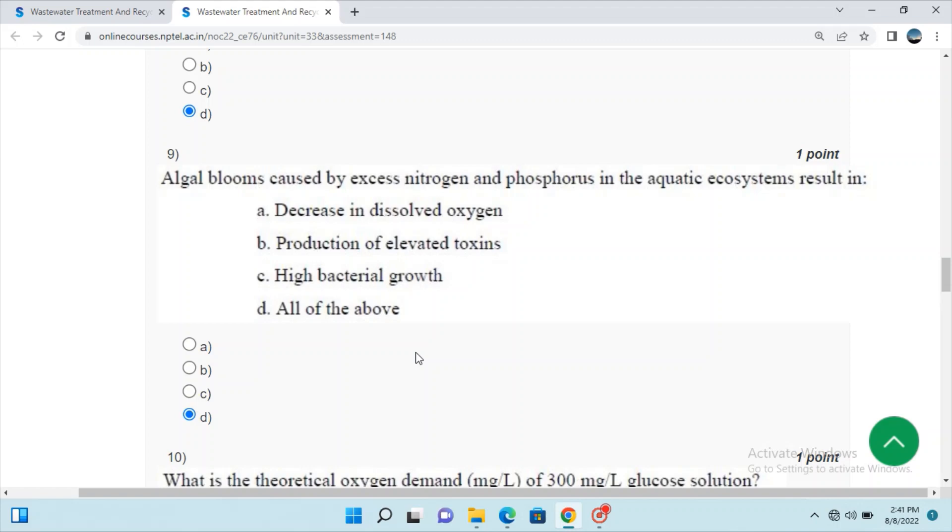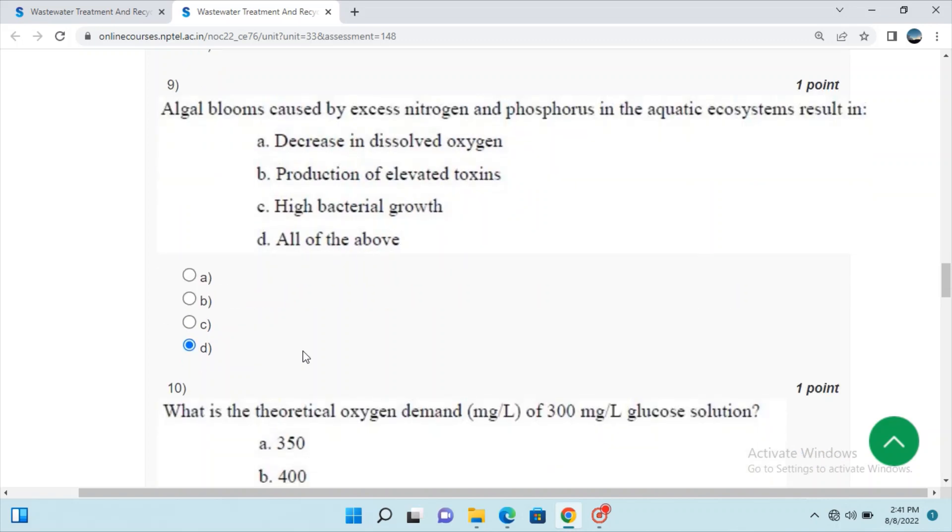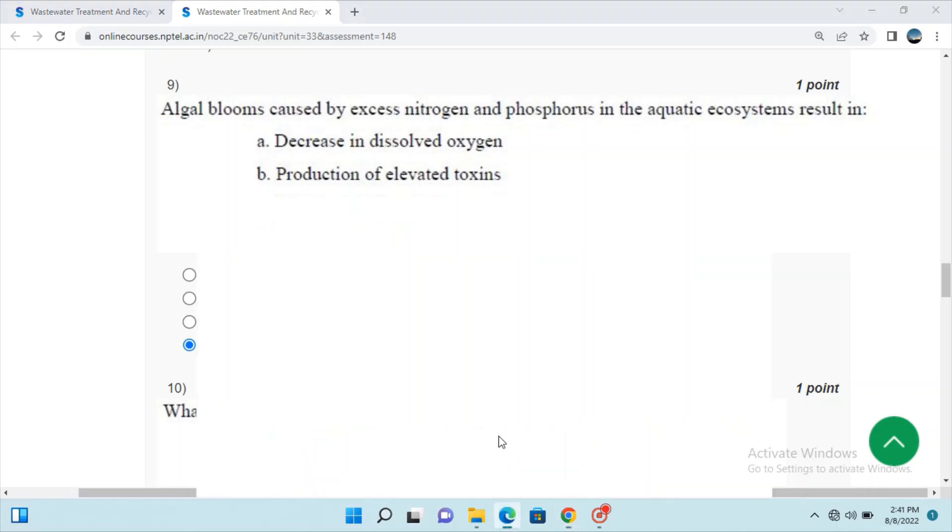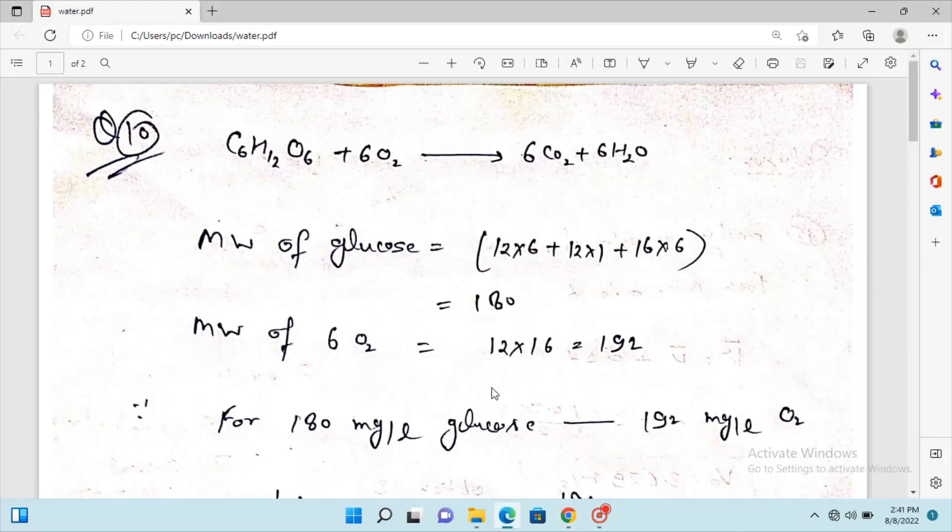Question 9: Algal blooms caused by excess nitrogen and phosphorus in aquatic ecosystems result in all of the above. Question 10: Now we are seeing the answer and solution of question number 10.